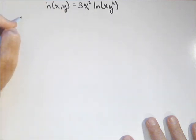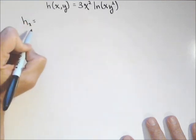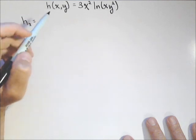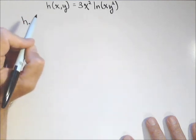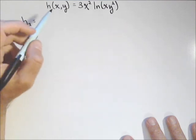All our old rules still apply. So I like to use the notation h sub x, which means my partial of h with respect to x. A lot of people will put h sub x of x, y, and that's fine. I'm just cutting out some steps to save some time. It's all about efficiency.